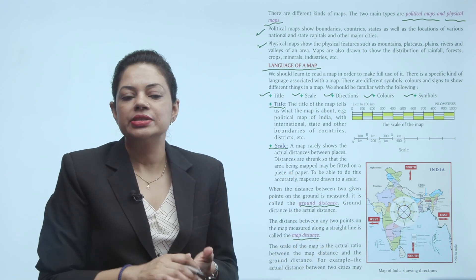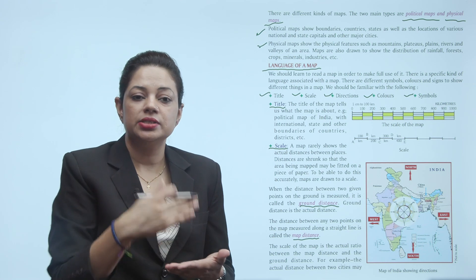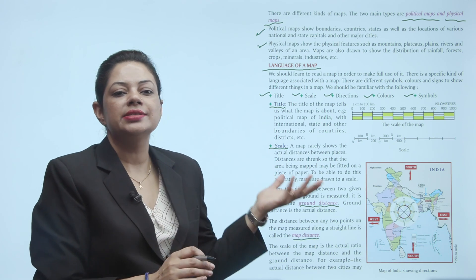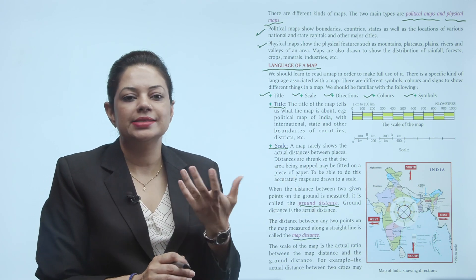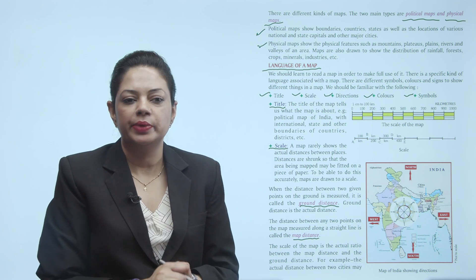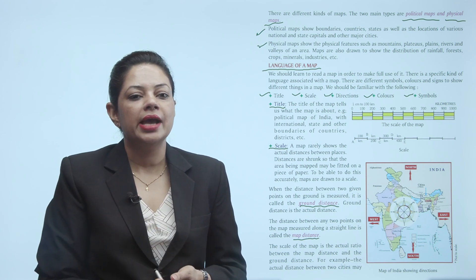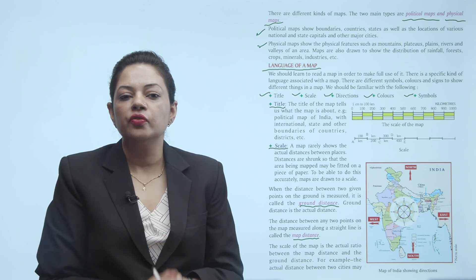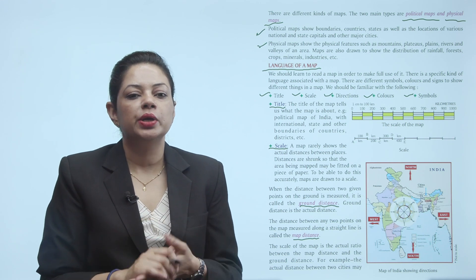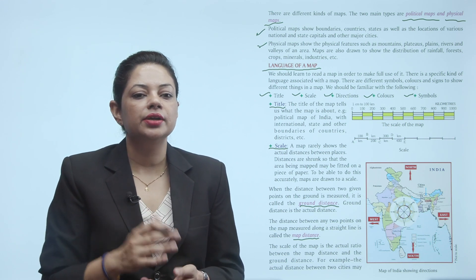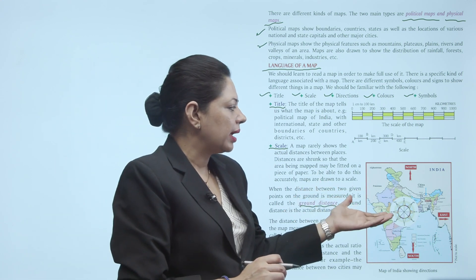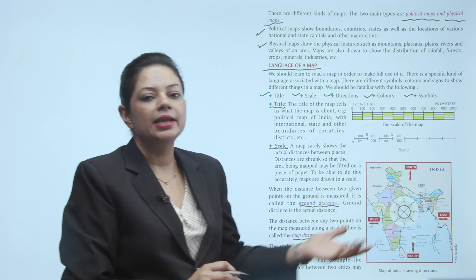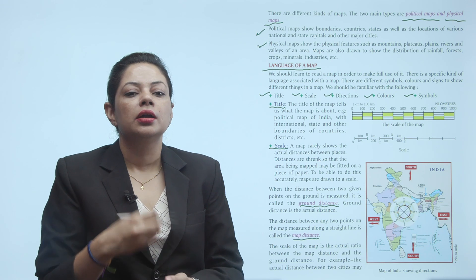Ground distance kya hua — jaise physically humne measure kiya ki yeh cheez yahan se kitni door hai, that is ground distance — jo actual distance hota hai. Map distance — jo ki hum ground distance ko map par show karte hain ek scale ka use karke — usko map distance kehte hain. And the scale of the map is the actual ratio between the map distance and the ground distance.